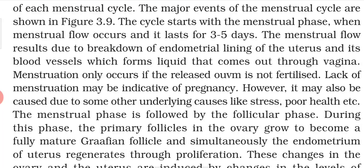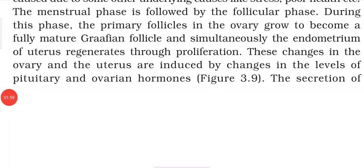The changes that occur in the ovary and uterus are induced by the levels of pituitary and ovarian hormones. Whenever these hormone levels change, the ovary and uterus also undergo changes. Two types of gonadotrophins are involved: LH (Luteinizing Hormone) and FSH (Follicle Stimulating Hormone).